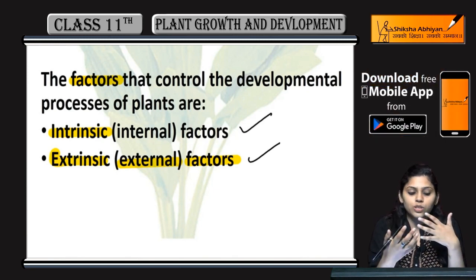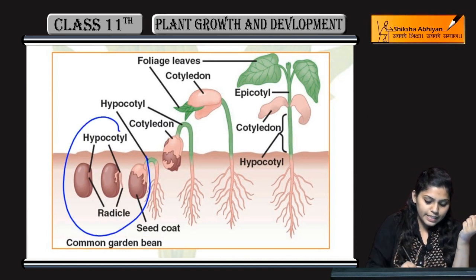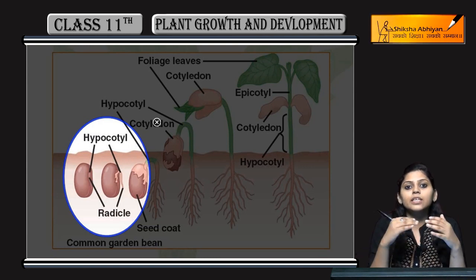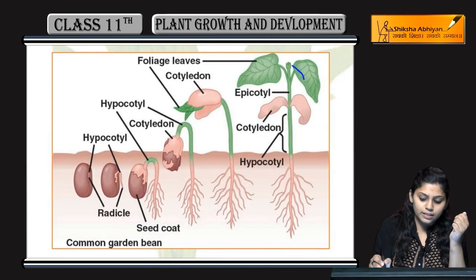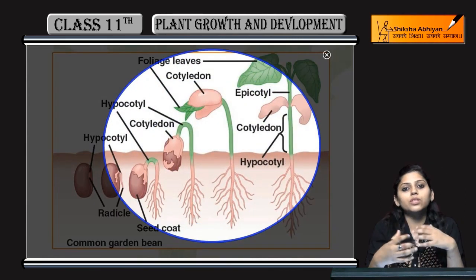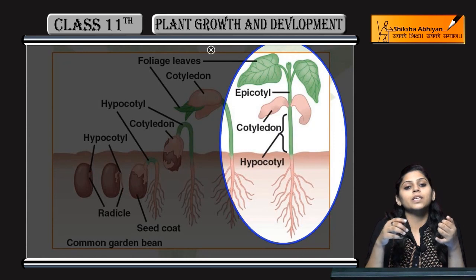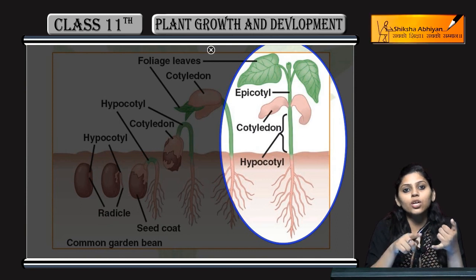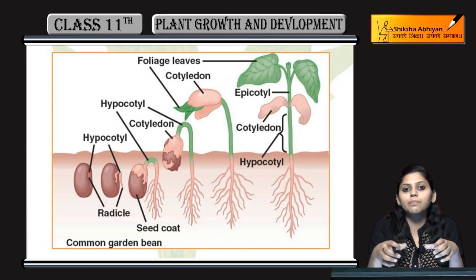Both internal and external factors are responsible for plant growth and development. You can see a seedling which has a hypocotyl and radicle region. From the hypocotyl, the upper part of the plant above the soil grows, and from the radicle, the root part grows. As it develops, cotyledons are formed, and finally a fully grown plant develops with hypocotyl, epicotyl, cotyledons, and root parts — meaning both shoot and root parts develop. In the next chapter, we will study in detail how plant growth and development occurs.